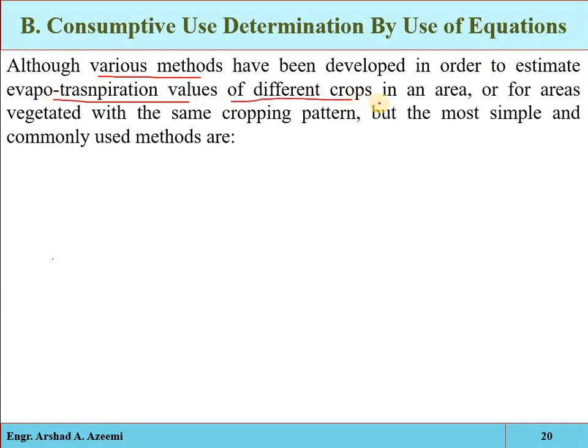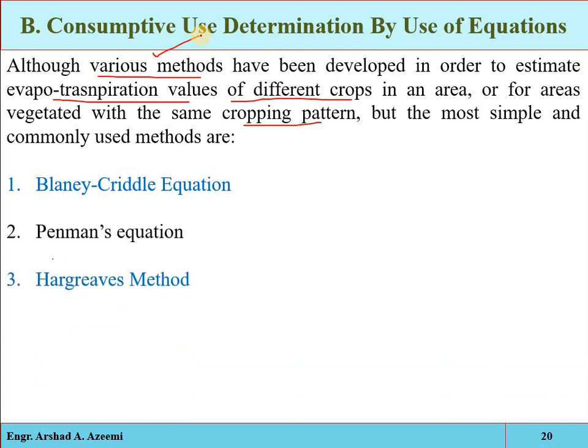Various methods are available to estimate evapotranspiration values of different crops. As already discussed, consumptive use or evapotranspiration is different for different crops in different areas, and also depends on the cropping period, the stage of growth, and the climatic and soil conditions. The most simple and commonly used methods are the Blaney-Criddle equation, the Penman equation, and the Hargreaves method — the three most widely used methods for irrigation purposes.